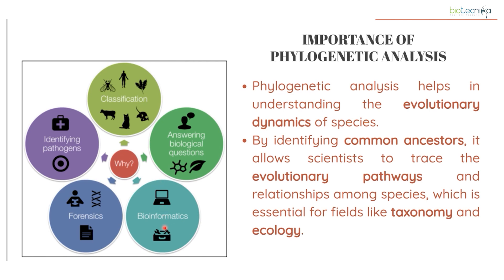Interpretations can be done by taking the help of informatics, which integrates with the interpretation of biological data by providing specific tools, resources, and validations using predictive algorithms. We can study phylogenetic analysis to identify phylogenes of our interest. Phylogenetic analysis helps in understanding the evolutionary dynamics of species, identifying common ancestors, and tracing evolutionary pathways to find relationships among species, which is essential for taxonomy and ecological interpretations.